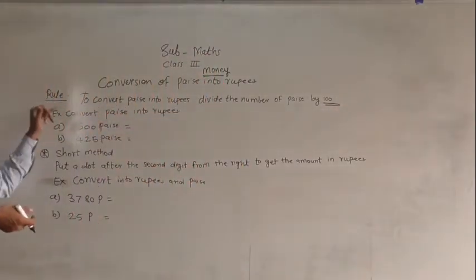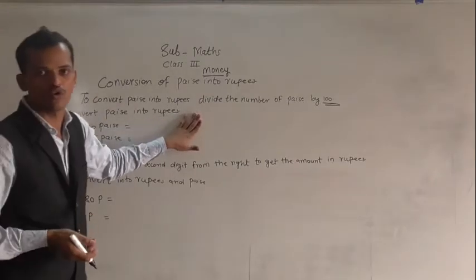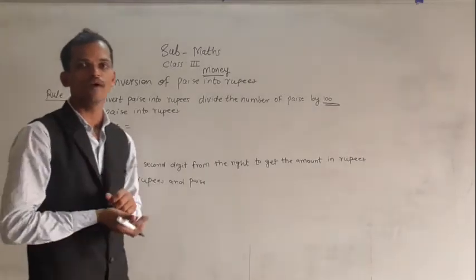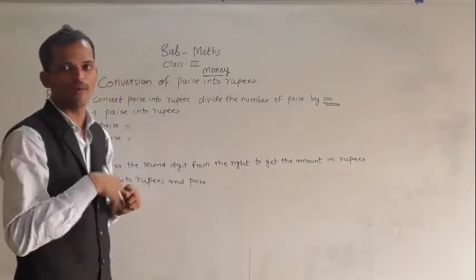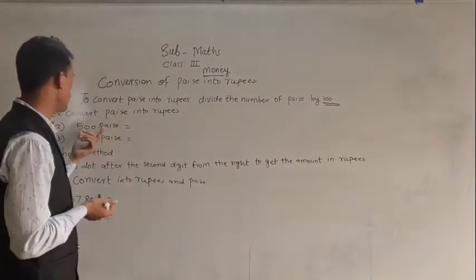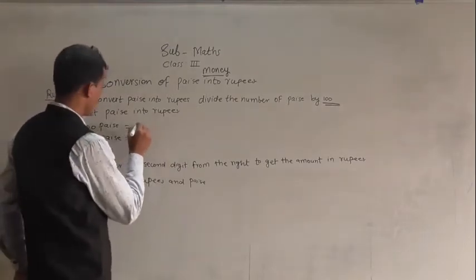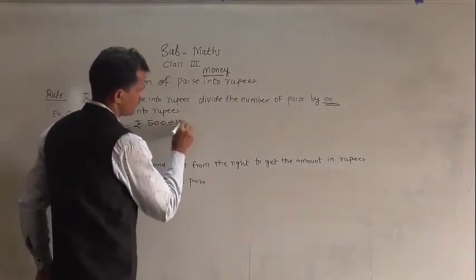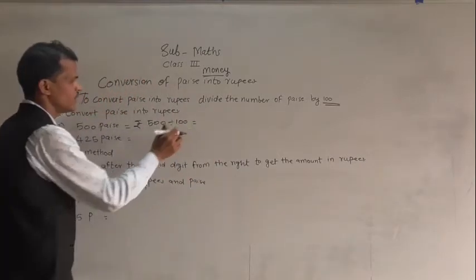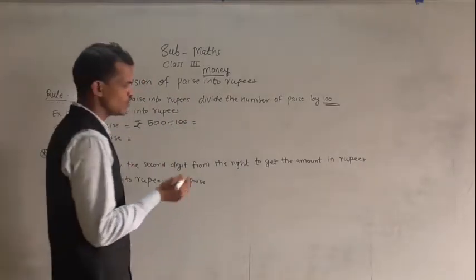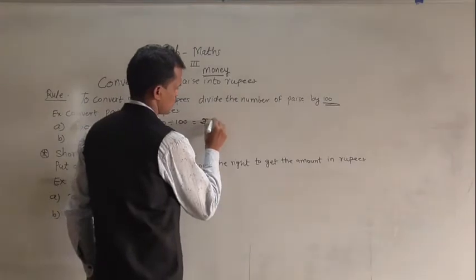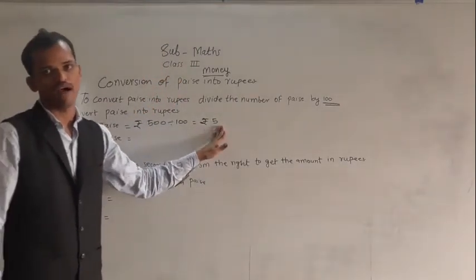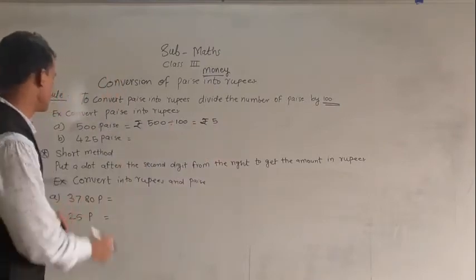Examples are given — convert paise into rupees. The amount is given in paise and we have to convert it into rupees. So divide that number by 100. 500 paise is equal to 500 divided by 100, which equals 5 rupees. So 500 paise is equal to 5 rupees.